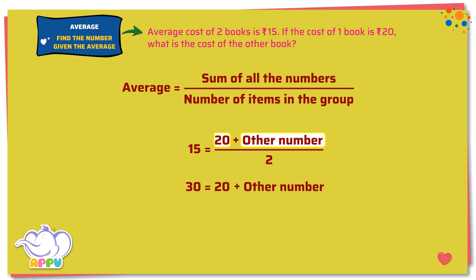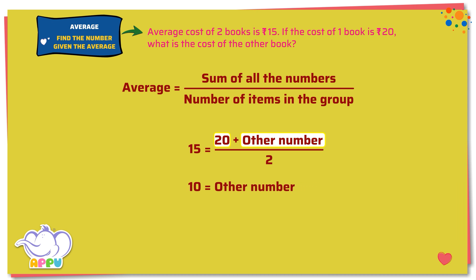Next, we subtract 20 from both sides. We get 30 minus 20 equals 20 plus the other number minus 20. Therefore, 10 equals the other number. So the cost of the other book is 10 rupees.